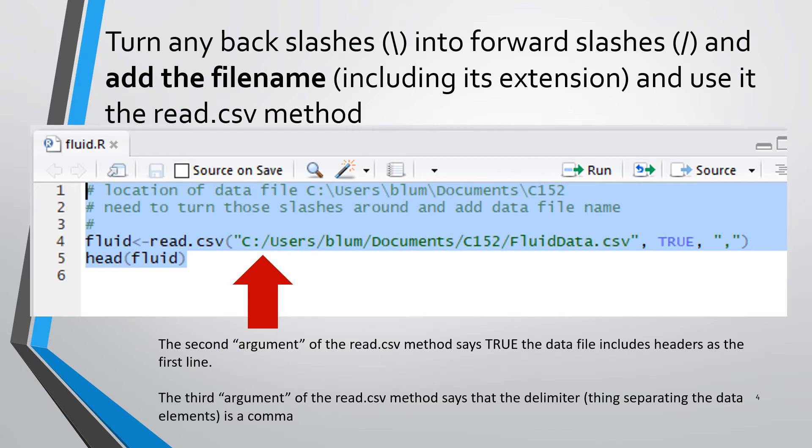In line four that is shown, we're using the read.csv method. Its first argument is the path of the file that we are reading. So we take the location we just obtained previously. If it has backslashes, we turn them into forward slashes and we make sure that our path includes the name of the file. You see it down there, fluiddata.csv. There was a slash before it, and it should also include the file extension, the .csv.